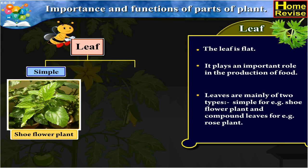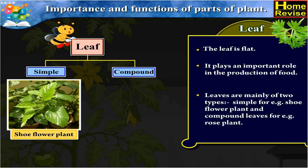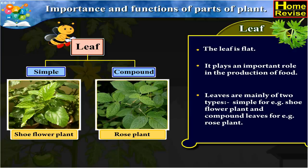Leaves are mainly of two types: simple, for example the shoe flower plant, and compound leaves, for example the rose plant.